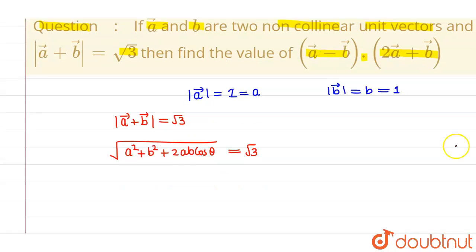If I square both sides and put the value of A and B, then I will be getting 1 plus 1 plus 2 cos theta equals 3.